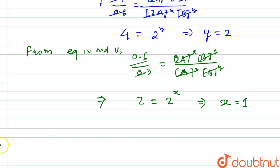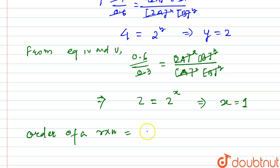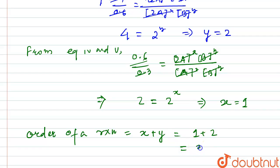The order of a reaction equals the sum of X and Y. The value of X is 1 and the value of Y is 2, so the order of the reaction will be 3. It is a third order reaction.